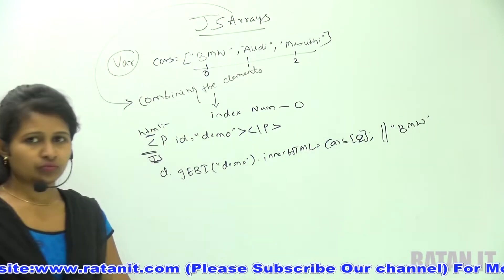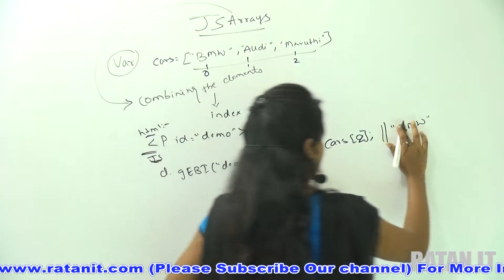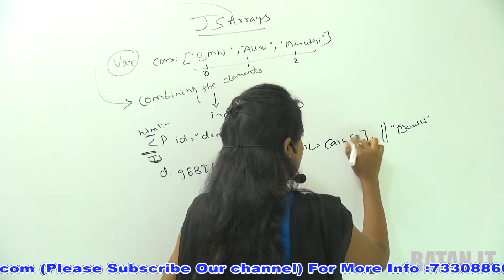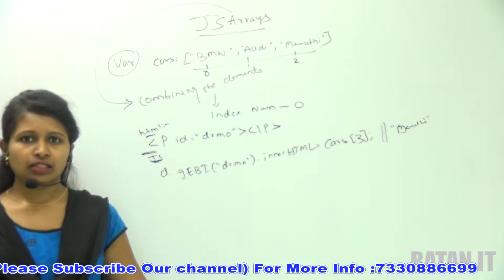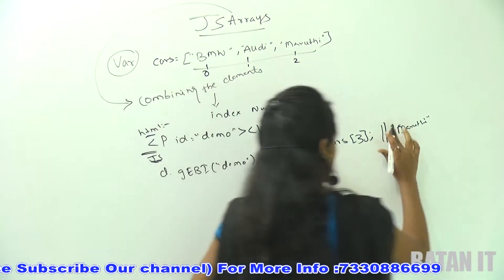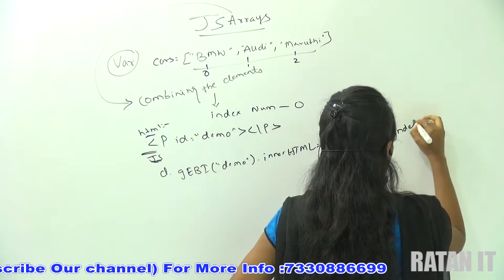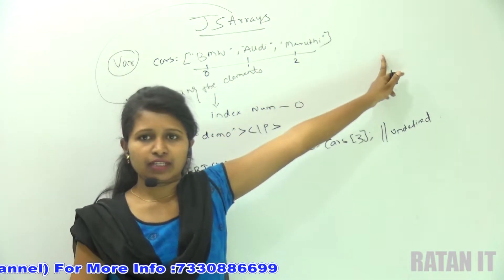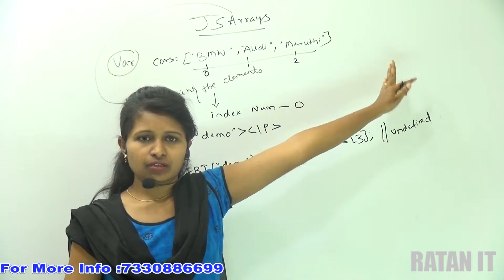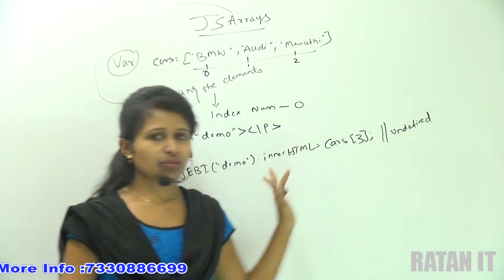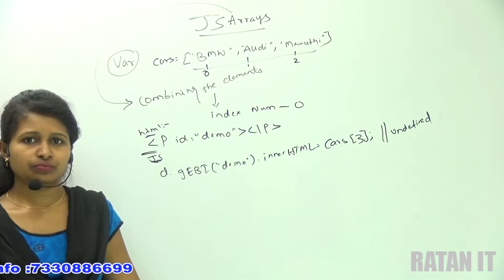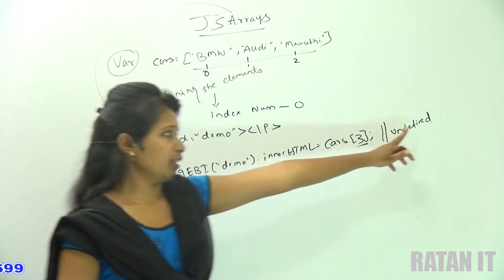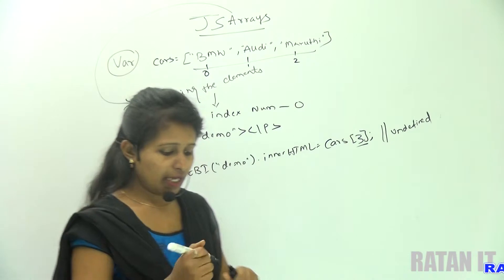If I give index 2, it produces the output Maruti. If I give index 3, it is mentioned as undefined — because I didn't give any value for index 3. So automatically, JavaScript will take it as an undefined value. Whatever index you give that is out of range, the value will be taken as undefined.